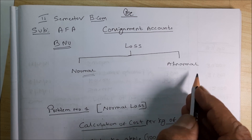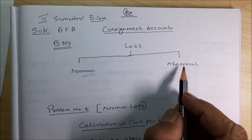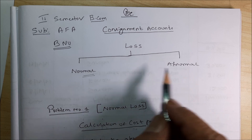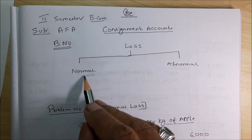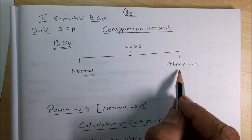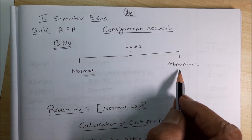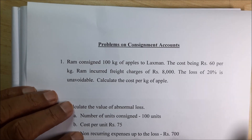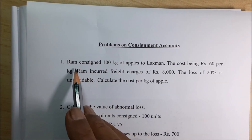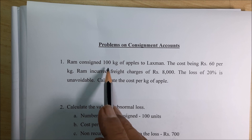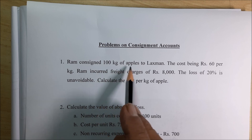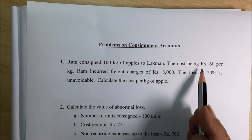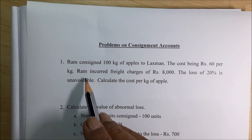We will now work out problems on how to find out the value of stock both for normal and abnormal loss. Problem number 1: Ram consigned 100 kgs of apples to Lakshman, the cost being Rs 60 per kg.